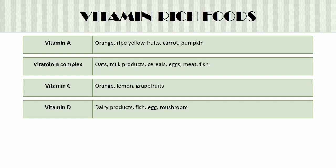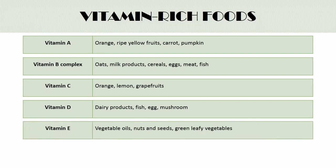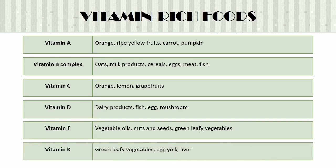Vitamin E is found in vegetable oils, nuts and seeds, and green leafy vegetables. Vitamin K is found in green leafy vegetables, egg yolk, liver, etc.